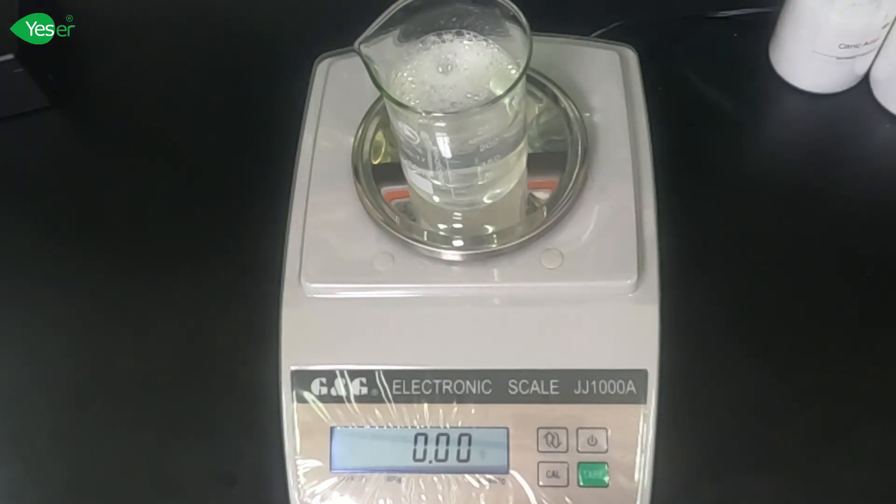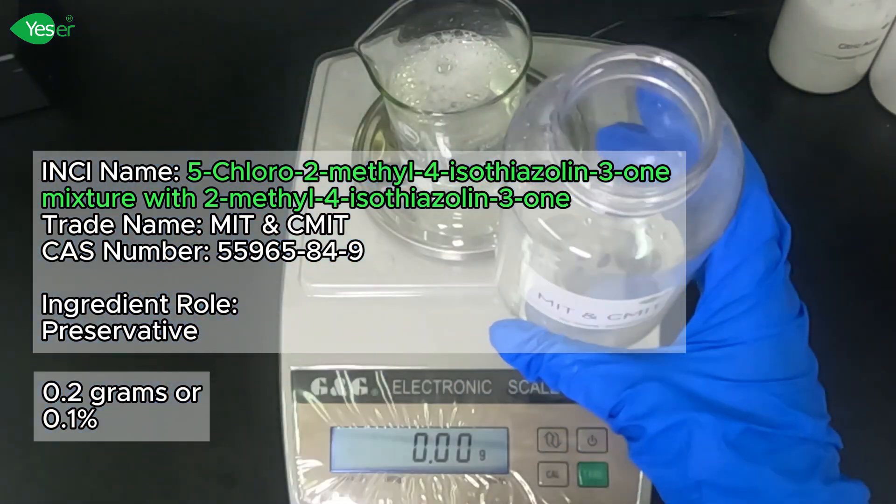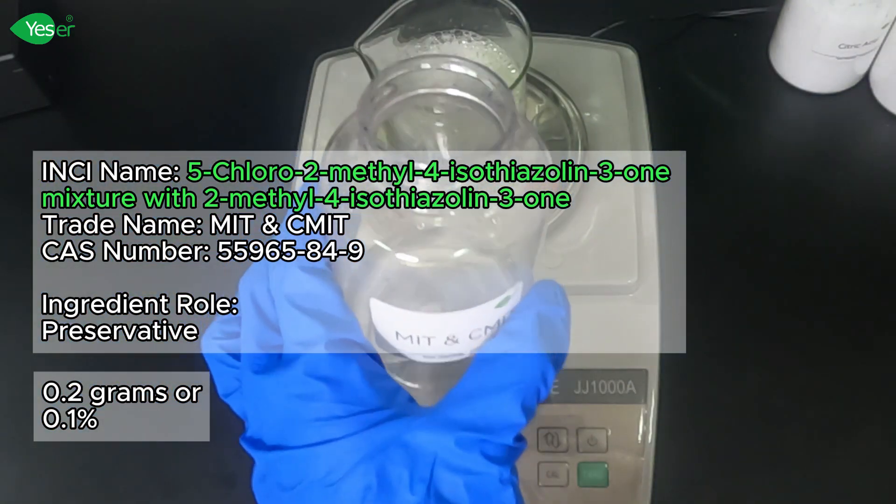After that, let's add our preservative, or MIT and CMIT. We weigh 0.2 grams of this, or 0.1% for our formula.